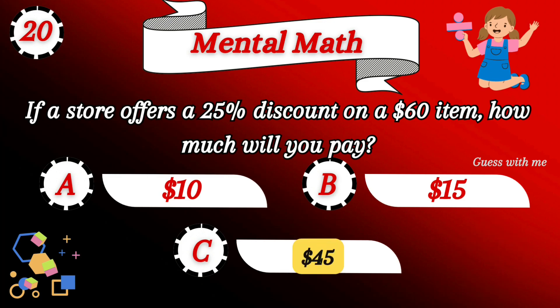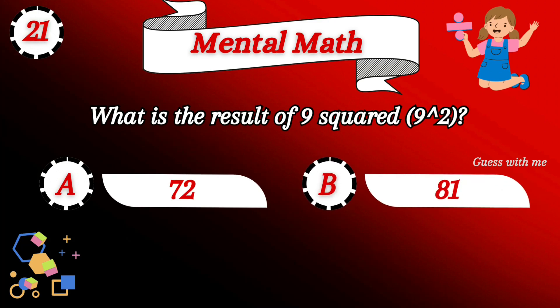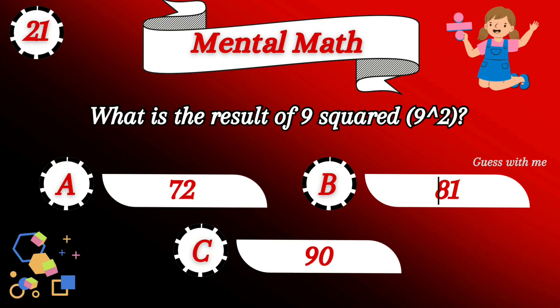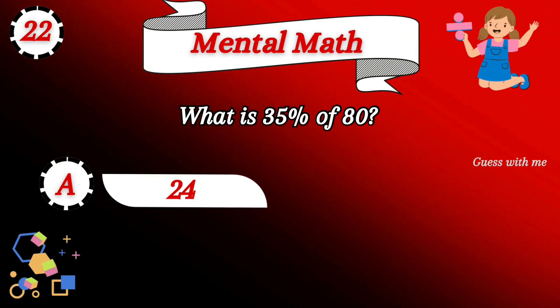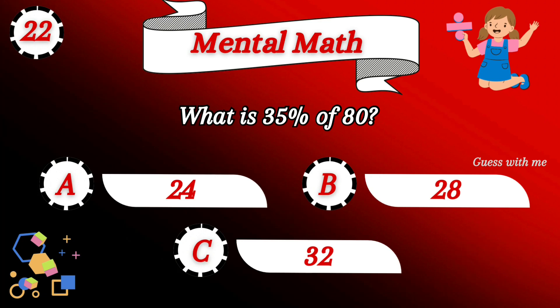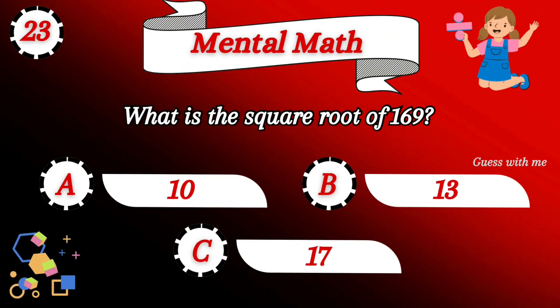Option C is the right answer. What is the result of 9 squared? Option B — 81 is the right answer. Question number 22: what is 35 percent of 80? Option B — 28 is the right answer.